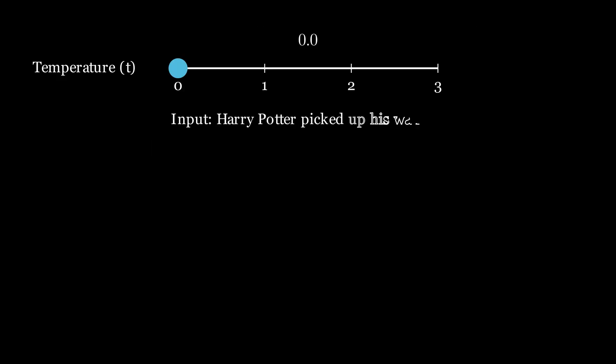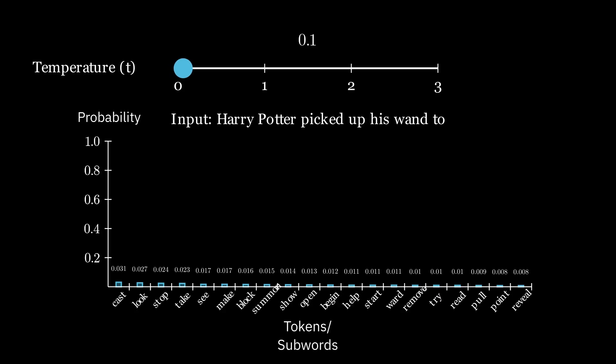When the temperature value is set to 1, the probability distribution looks the same as after applying a regular softmax function.